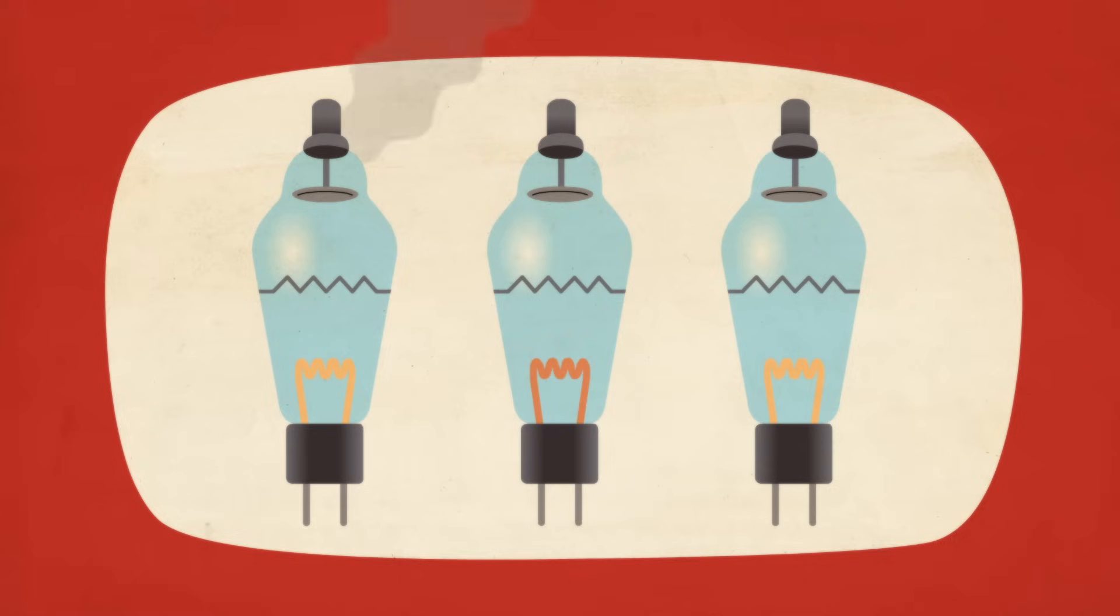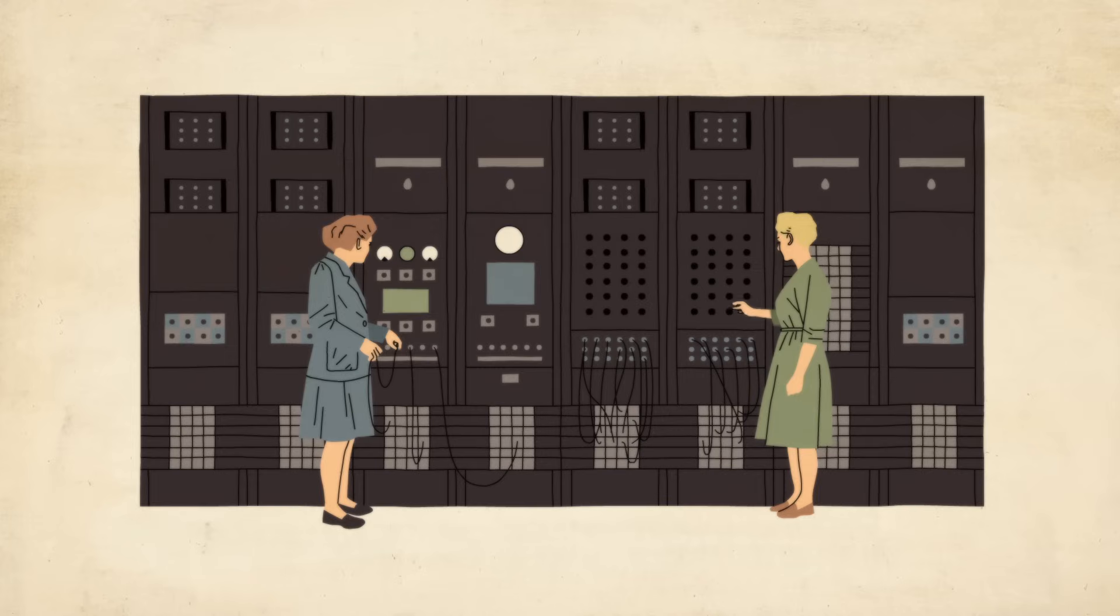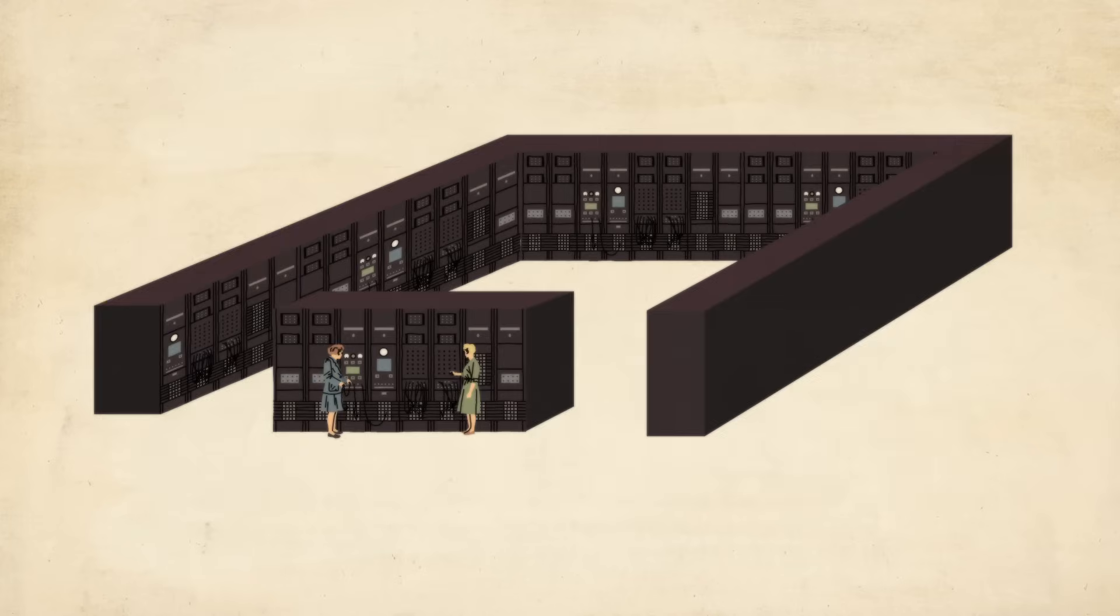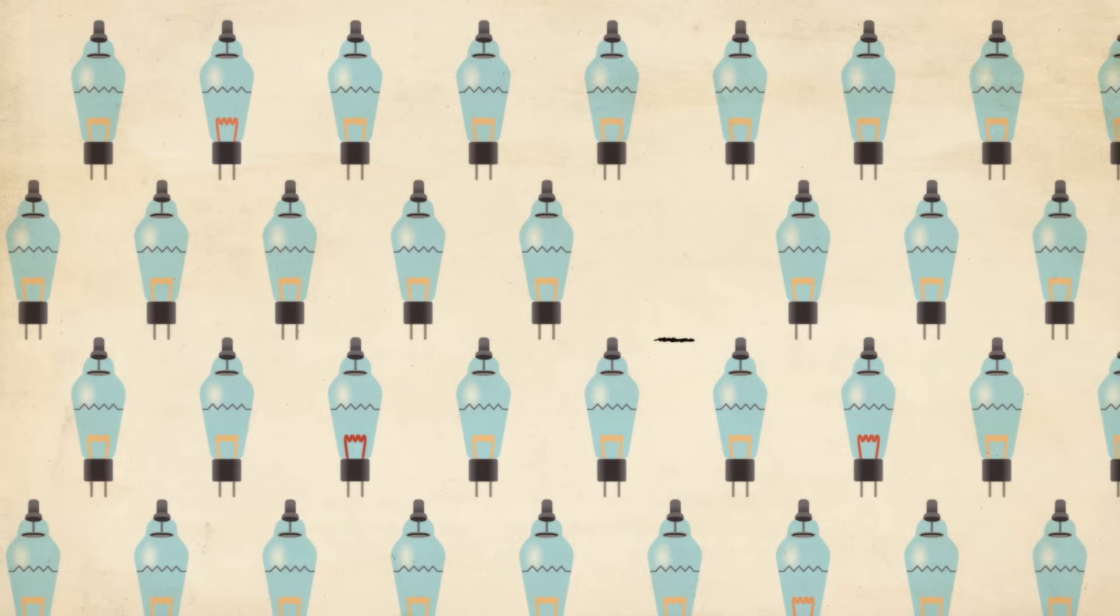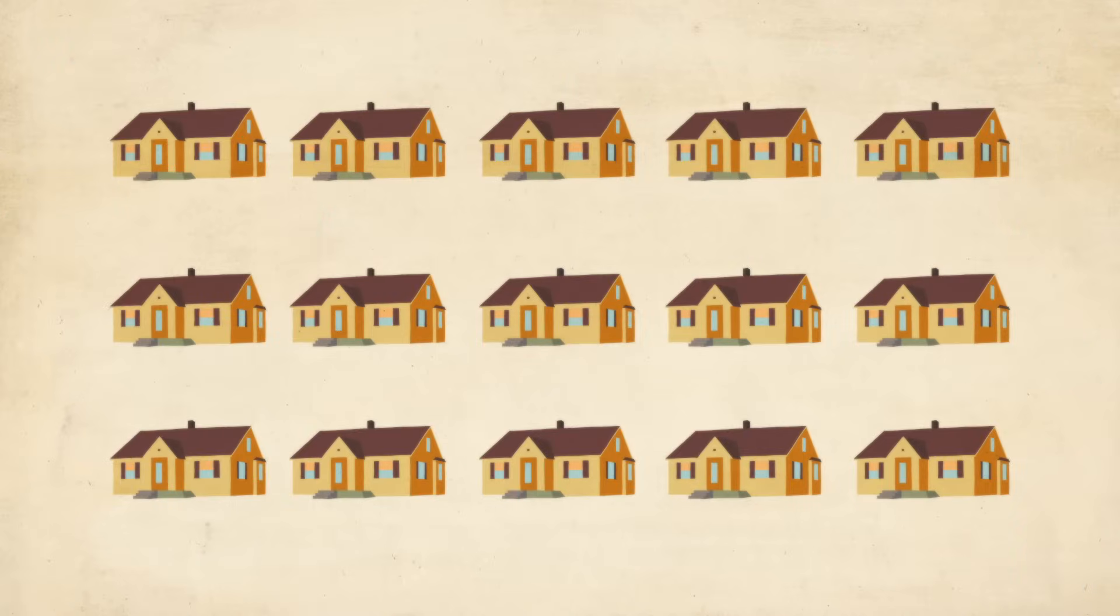But despite these advancements, vacuum tubes were unreliable and bulky. With 18,000 triodes, ENIAC was nearly the size of a tennis court and weighed 30 tons. Tubes failed every other day, and in one hour, it consumed the amount of electricity used by 15 homes in a day.